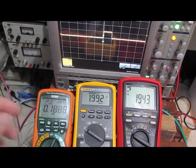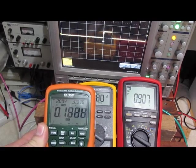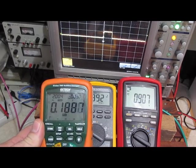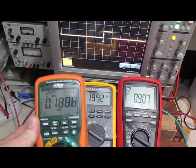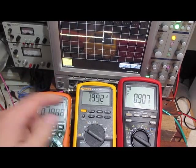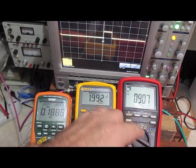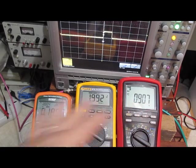We'll go ahead and decrease the pulse width further. It's now a 200 microsecond pulse width. In the X-TEC, we can see it's 2.004. The Fluke, 1.992. And the Brymen, 0.907.